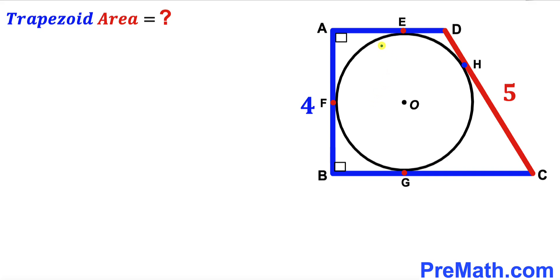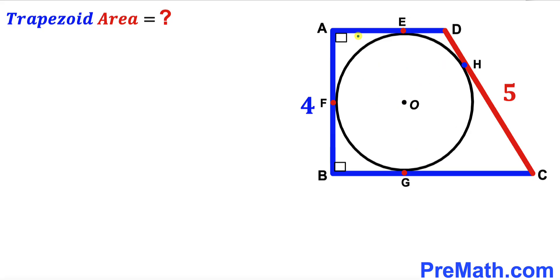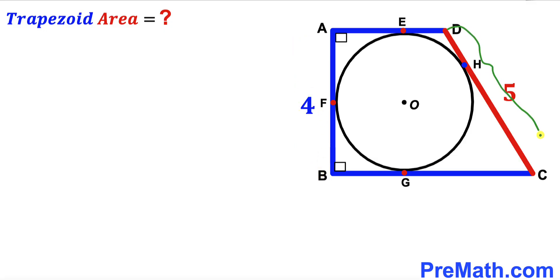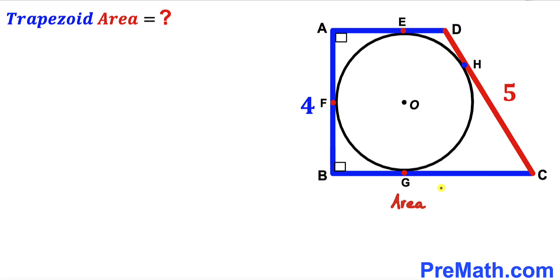Welcome to Pre-Math. In this video we have a circle with center O, fully inscribed in a trapezoid ABCD. As you can see in the given diagram, the height AB is 4 units and the side CD is 5 units. E, F, G, and H are points of tangency, and our task is to calculate the area of trapezoid ABCD.